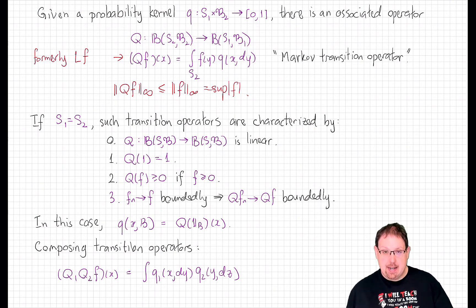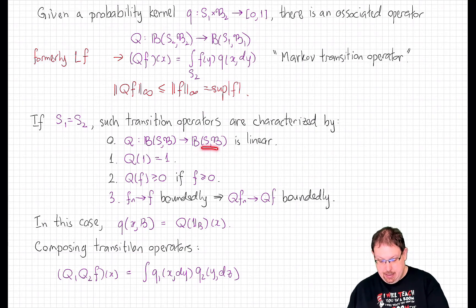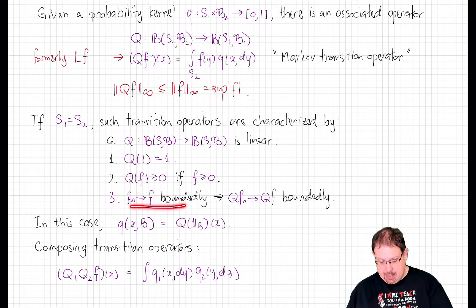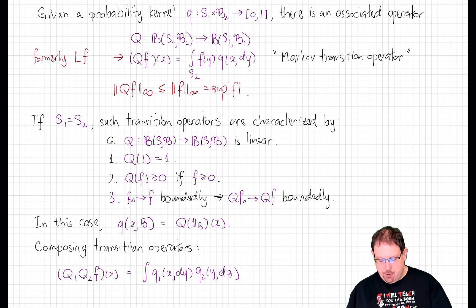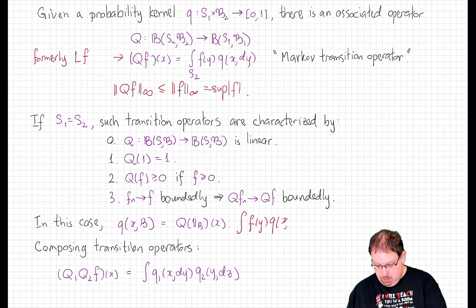In fact, we have more properties that characterize these operators, at least when we have the same state space for both variables. Any transition operator associated to a probability kernel satisfies four properties: it is a linear operator on the bounded functions, it maps 1 to 1, it preserves positivity, and it is continuous under bounded convergence. Conversely, any operator satisfying these four properties is the Markov transition operator of some unique probability kernel. We can recover that probability kernel by applying the operator to the indicator function of a set B, giving Q of x and B as that expression. And integrating a function against the recovered probability kernel gives back the same operator Qf at x.